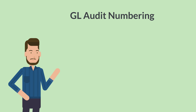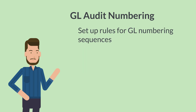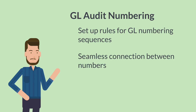With this feature, you can set up rules for GL numbering sequences. And at the end of each accounting period, the transaction numbers in your general ledger will be seamlessly connected to one another with no gaps between numbers. Once a GL audit numbering sequence has run on a period, each transaction receives a new number that directly follows the number for the previous posting transaction, even if the two transactions are different types.